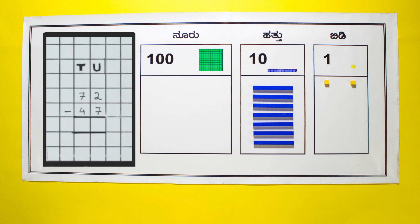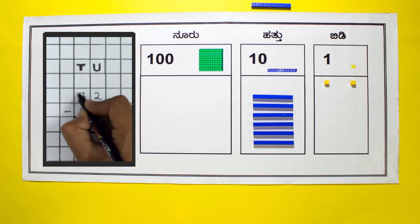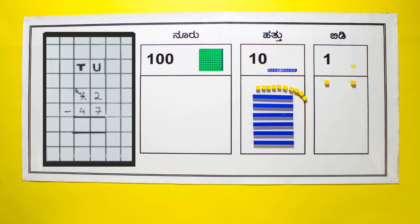Subtraction always starts from the units place. The subtrahend 47 has 7 units, but we cannot subtract 7 from 2 unless we borrow 1 ten from the tens place and regroup as 10 units.